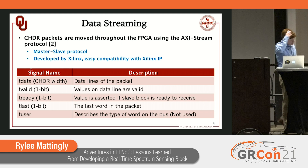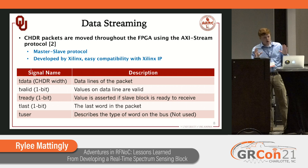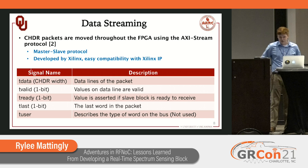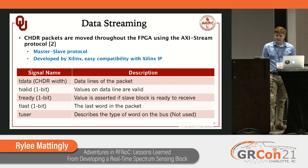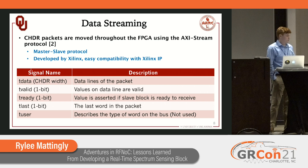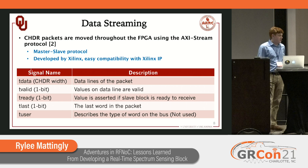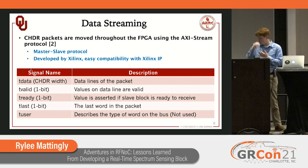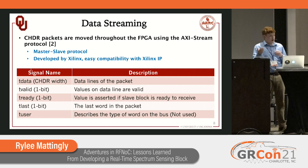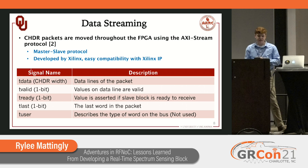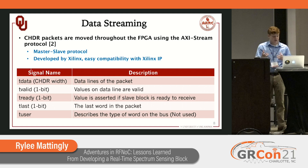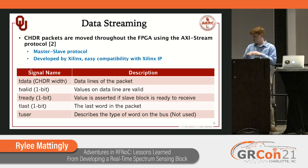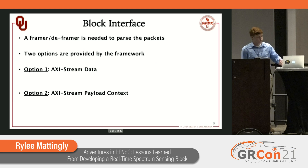CHDR packets are moved to the FPGA using an AXI Stream protocol, standardized by Xilinx. Most of their IP blocks use this AXI Stream protocol so you can interface directly with them. The FFT block provided with the framework takes advantage of this — you see AXI Stream being piped into the FFT IP block. This stream has a few signals of interest: a data line, a valid bit indicating if the current word is valid, a ready bit from the recipient block indicating it's ready to receive, a TLAST to indicate the last word in a packet, and a TUser signal that describes what kind of word is on the bus.